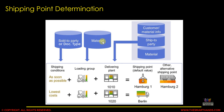The formula for determination is basically the shipping condition, which comes from the sold-to party, plus the loading group from the material master, plus the delivering plant, which is determined either using the customer-item-relationship or from the ship-to party or from the material master. When these three combine in the customizing, the system can say that for this specific combination this should be the default shipping point.